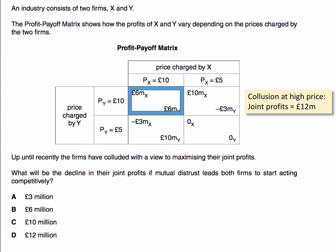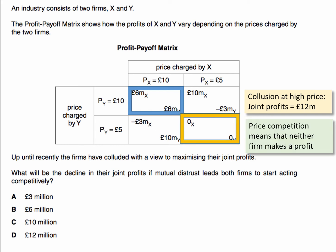If distrust leads to the breakdown of the cartel, they're both likely in a Nash equilibrium to charge a low price. That way they avoid the risk of a loss, so they'll end up in the bottom right-hand corner of our payoff matrix — both charging £5 — and that's sufficient to wipe out their profits. Price competition means that neither firm X nor Y makes a profit.